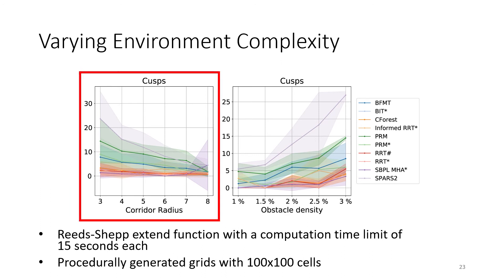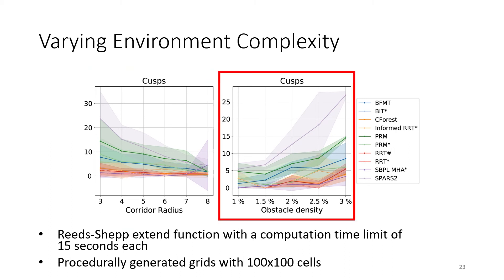We can see that the number of cusps significantly decreases for almost all motion planning algorithms as the corridor sizes become bigger. On the other hand, the number of cusps goes up for almost all motion planning algorithms as the percentage of blocked cells increases.